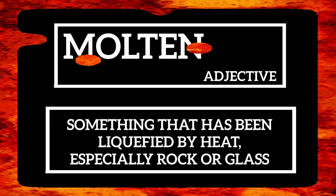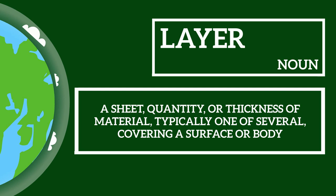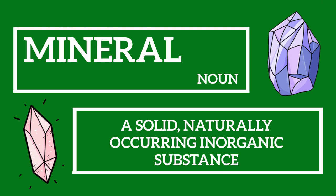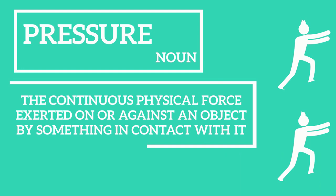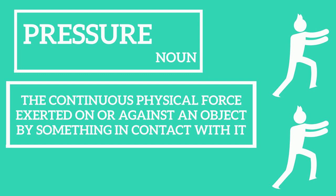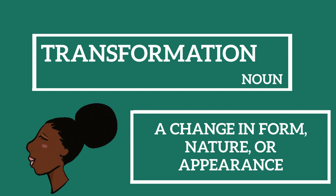Our next word is 'layer' — a sheet, quantity, or thickness of material, typically one of several covering a surface or body. Next up, 'mineral' — a noun describing a solid, naturally occurring inorganic substance. 'Accumulate' is a verb meaning to gather together or acquire an increasing number or quantity of something. 'Pressure' is a noun meaning the continuous physical force exerted on or against an object by something in contact with it. 'Transformation' is a noun meaning a change in form, nature, or appearance.